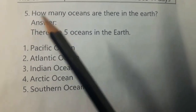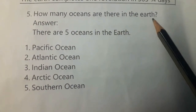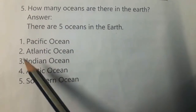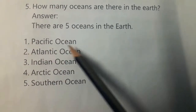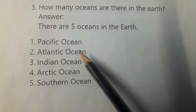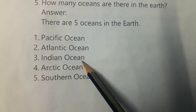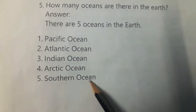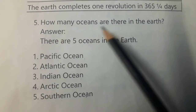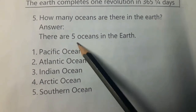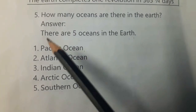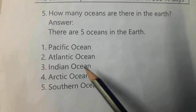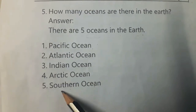Fifth question: How many oceans are there in the Earth? There are 5 oceans in the Earth. The first one is the Pacific Ocean, second is the Atlantic Ocean, third is the Indian Ocean, fourth is the Arctic Ocean, and fifth is the Southern Ocean.